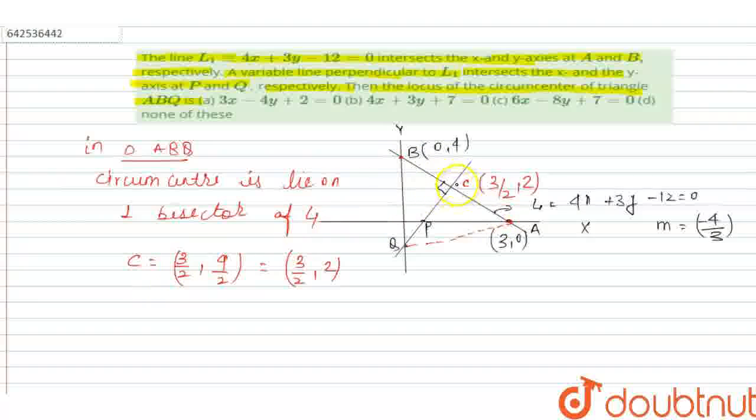And in this question, given that QC is perpendicular to AB, then definitely slope of AB into slope of QC is equal to minus 1. And the slope of AB is, we know that the slope of AB is minus 4 by 3, then minus 4 by 3, then slope of QC we have to find is equal to minus 1, then the value of M is 3 by 4.